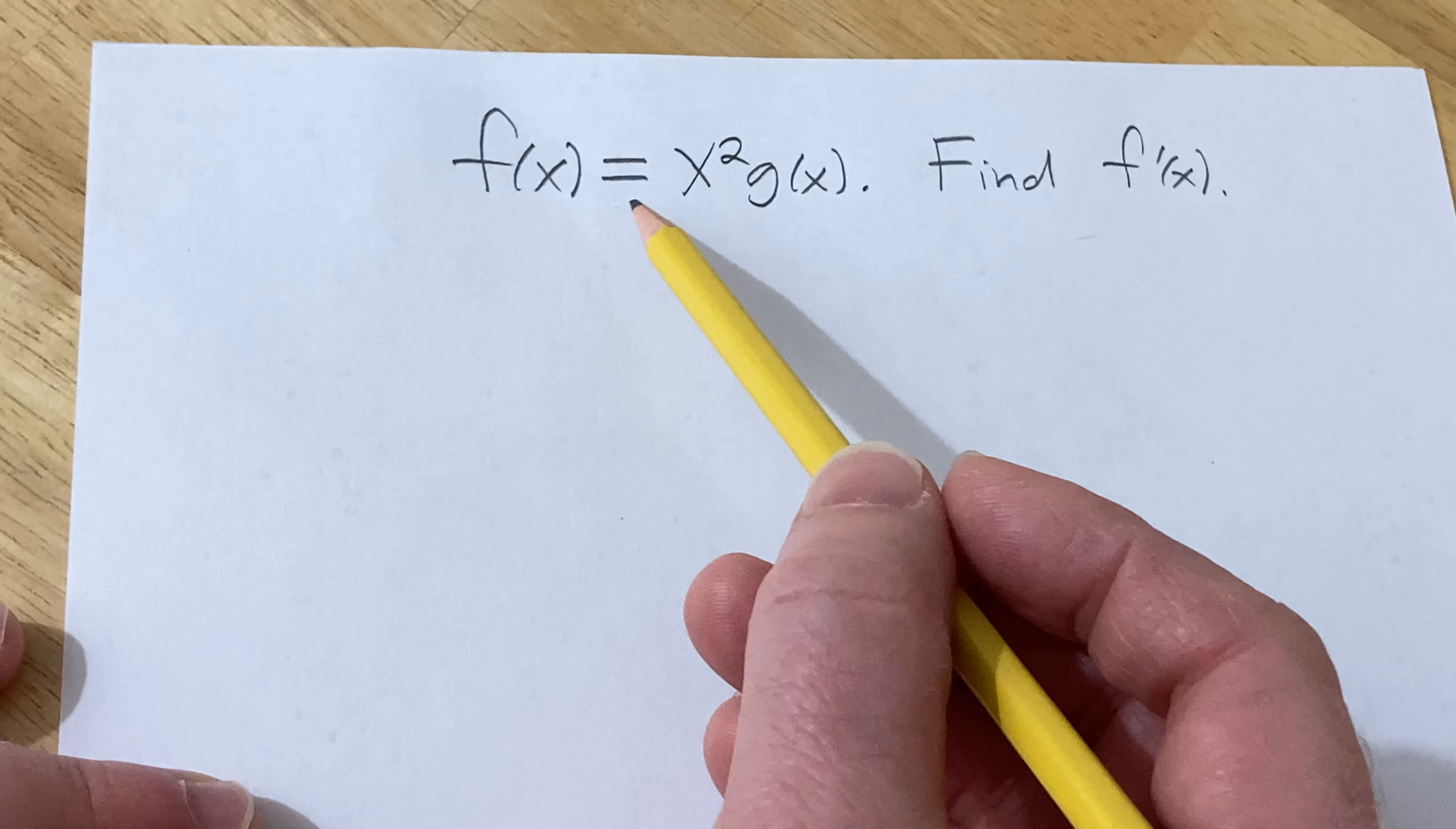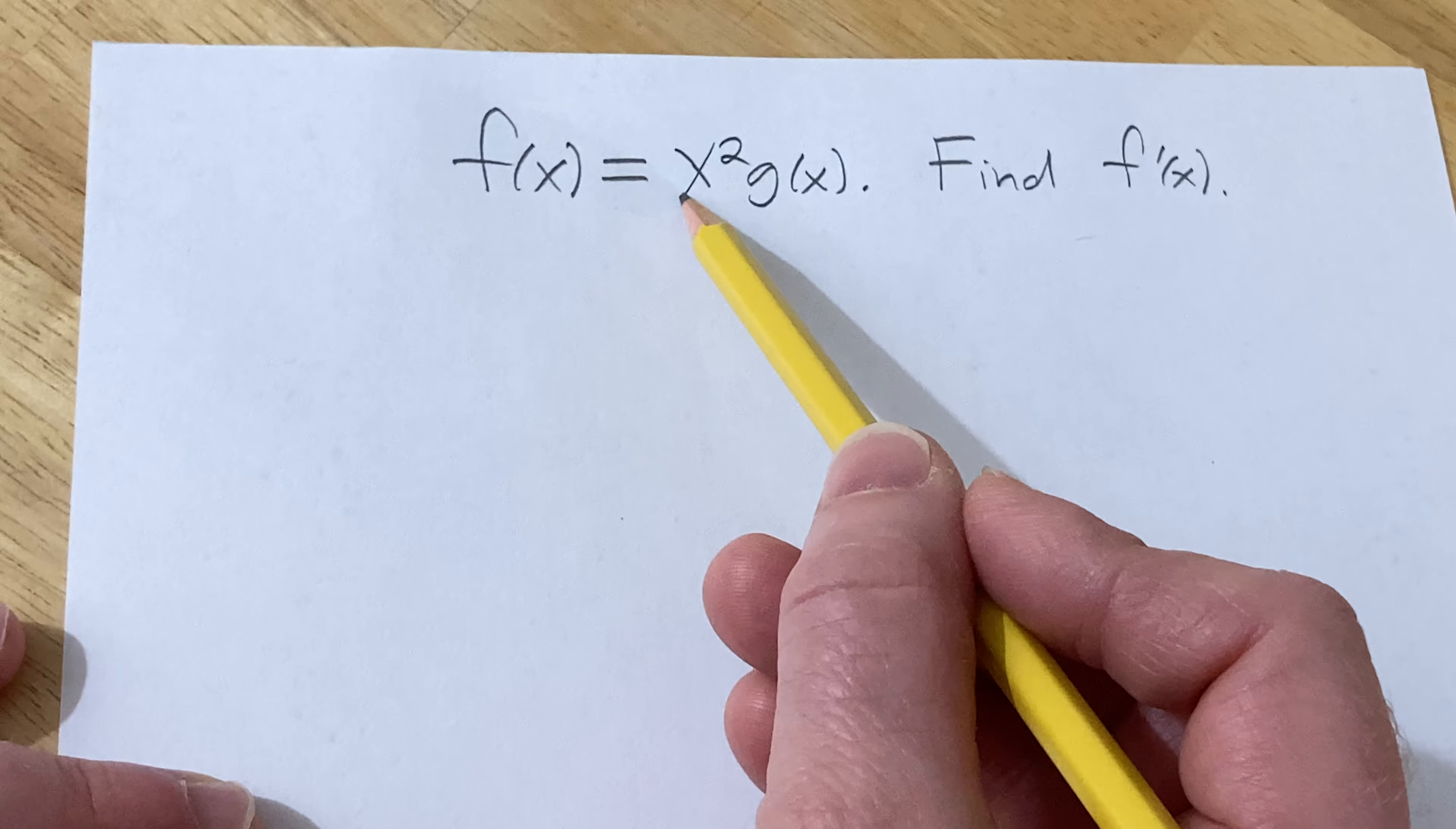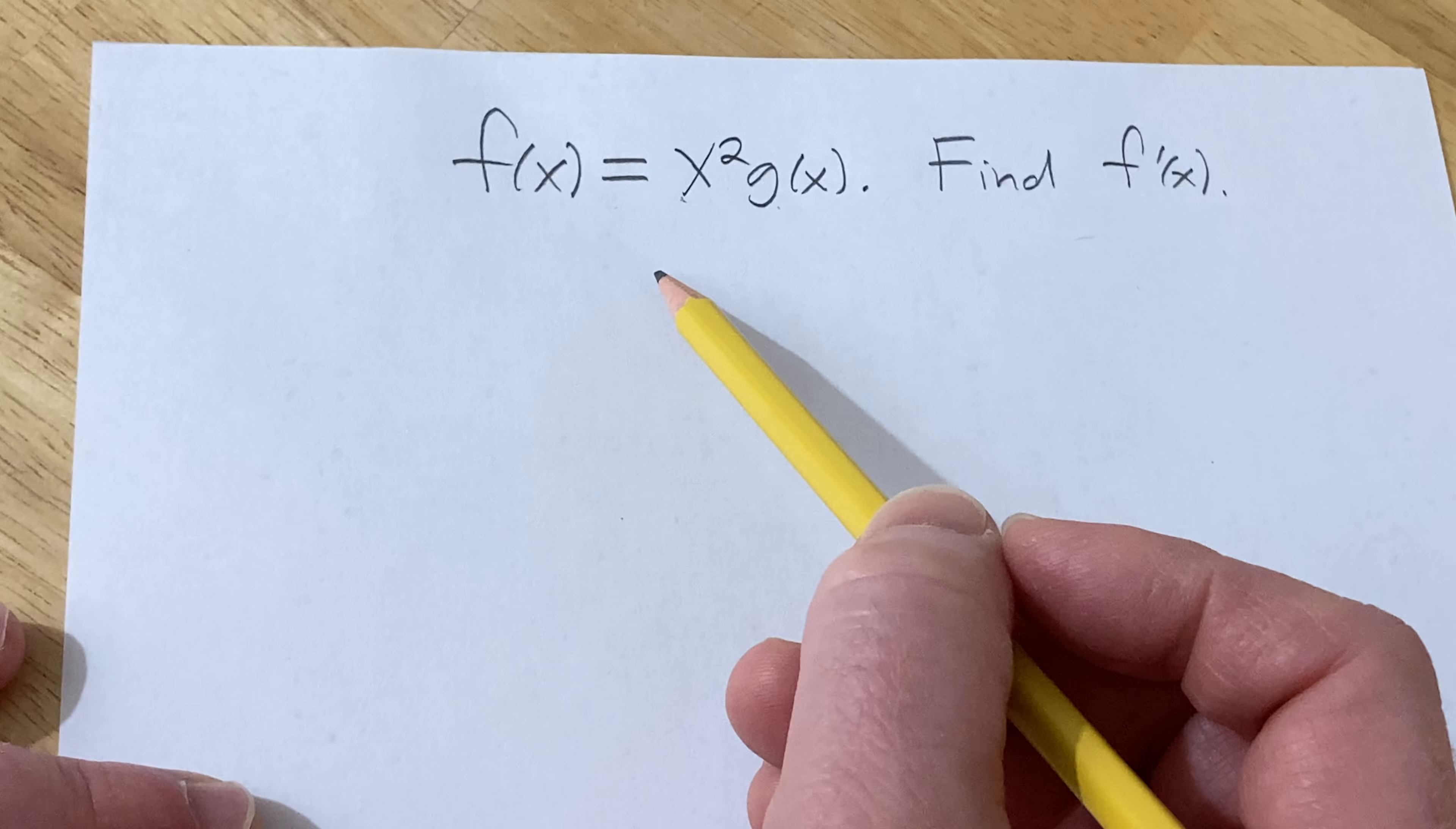To do this we're going to use something called the product rule. That's because we actually have a product. We have x squared times g of x.